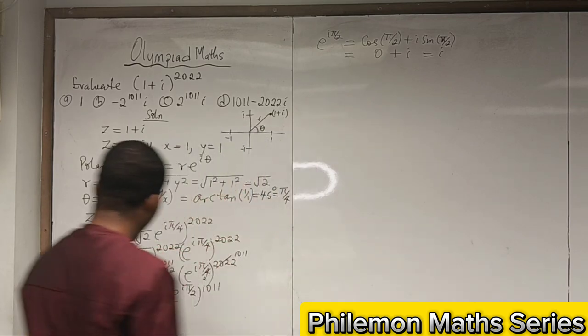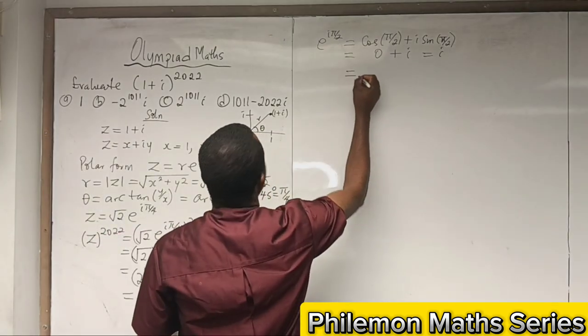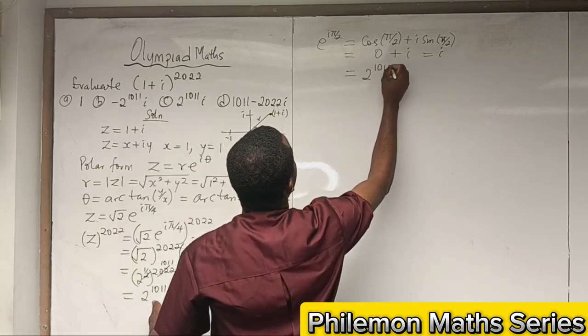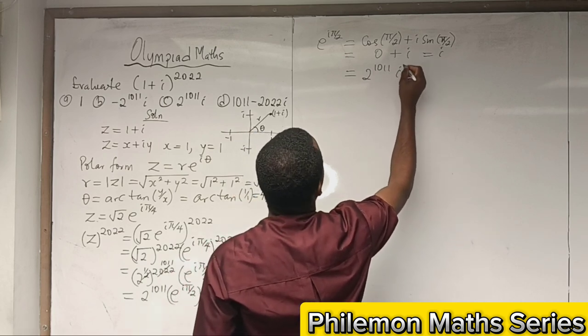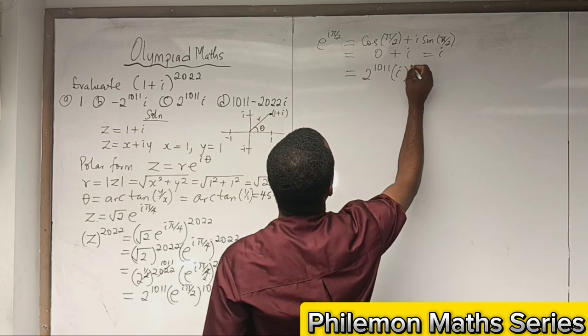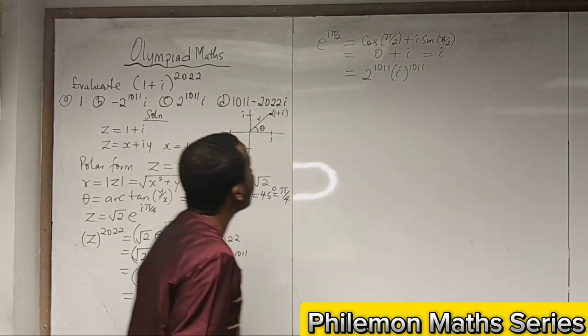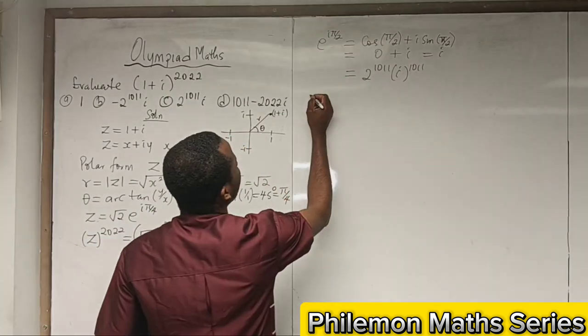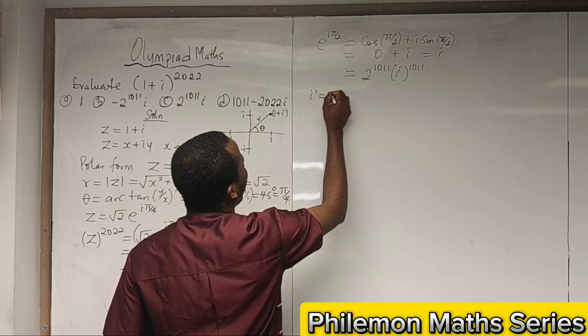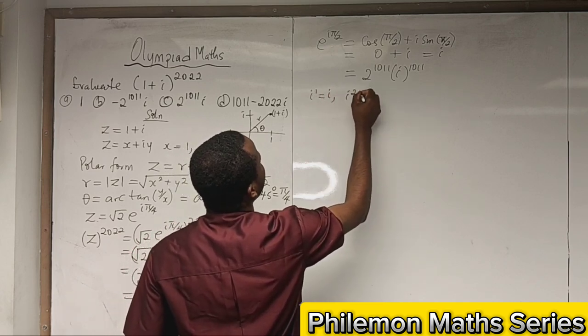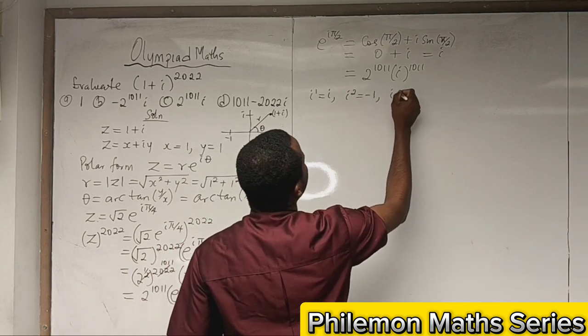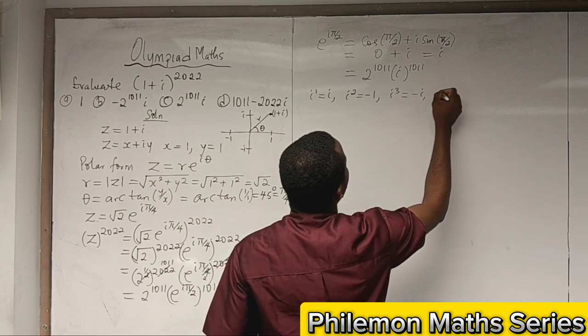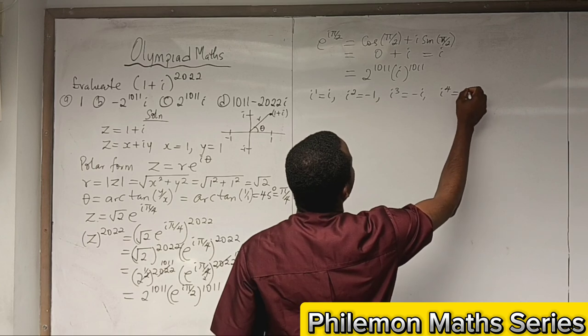Now let's substitute. We will then have 2^1011 * i^1011. How do we evaluate i^1011? Remember: i^1 = i, i^2 = -1, i^3 = -i, i^4 = 1.